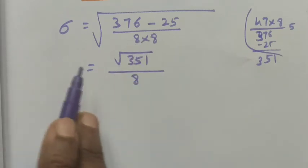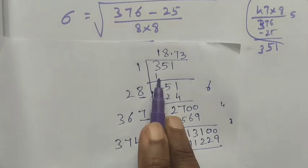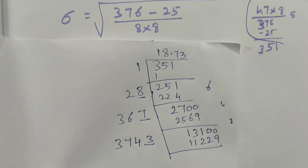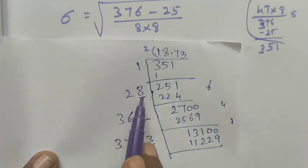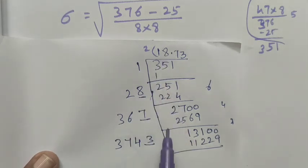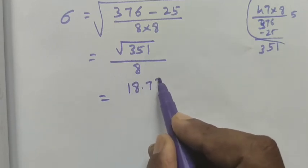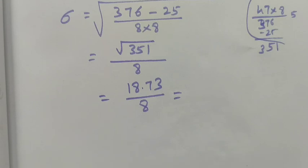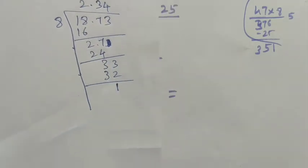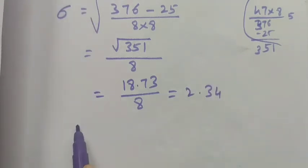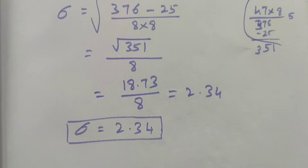Since we have 8 × 8 in the denominator, we can take 8 outside the square root, leaving square root of 351 divided by 8. The square root of 351 is 18.73. Therefore sigma = 18.73 divided by 8 = 2.34. So the standard deviation of the pages yet to be completed is 2.34. Thank you, students.